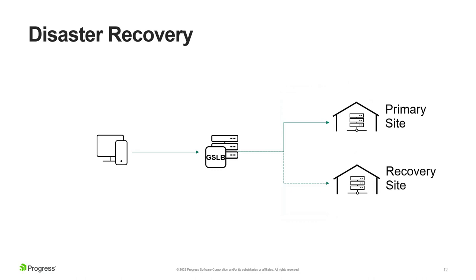This brings us into disaster recovery scenarios, which is one of the most popular uses for GSLB. If you have multiple sites and just need a disaster recovery site — 99% of the time all traffic goes to your primary site, but that 1% of the time you need to fail over to your DR site. You can do what's called fixed weighting, where you send everything to the primary site unless it becomes unavailable, then do the failover. When the primary site comes back up and starts passing health checks again, it automatically fails back with no user interaction required.